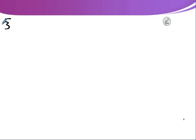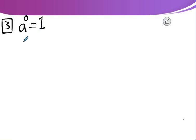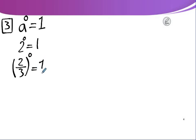Rule number 3: A to the power 0 equals 1. Any number to the power 0 equals 1. For example, 2 to the power 0 equals 1, and 2/3 to the power 0 equals 1 also.